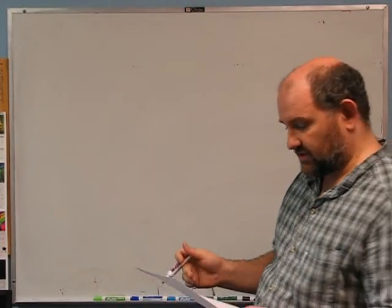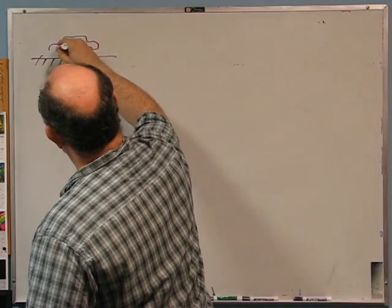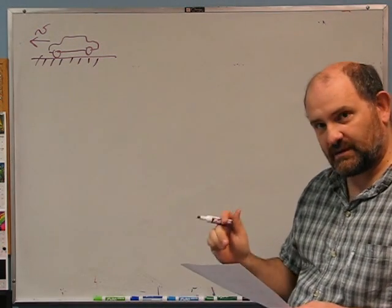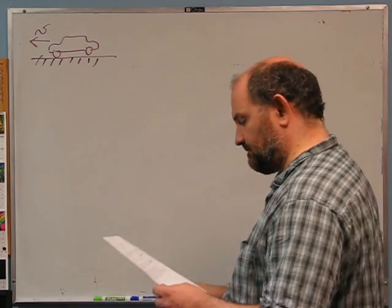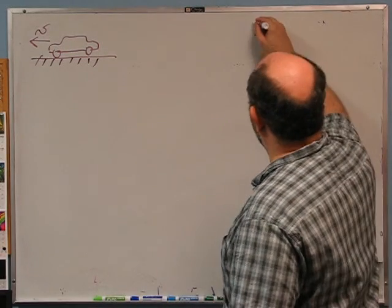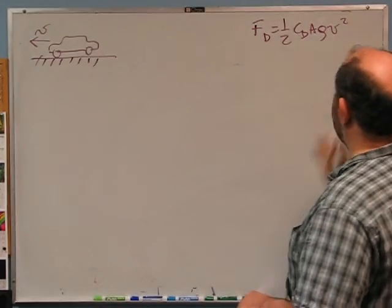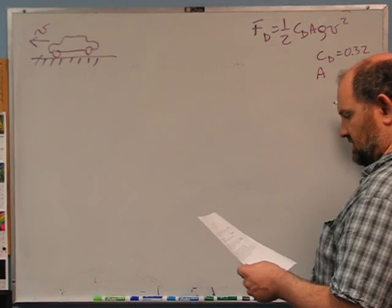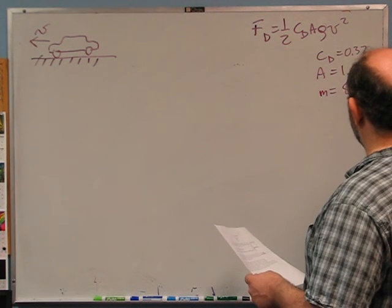Third problem: a car is driving along a flat freeway at 60 miles per hour. At these speeds, assuming proper tire inflation, air resistance is the dominant force the car has to fight to maintain its speed. So assume the only force pushing back on the car is air resistance. The high-speed air resistance approximation gives drag force equal to one-half CD A rho V squared.